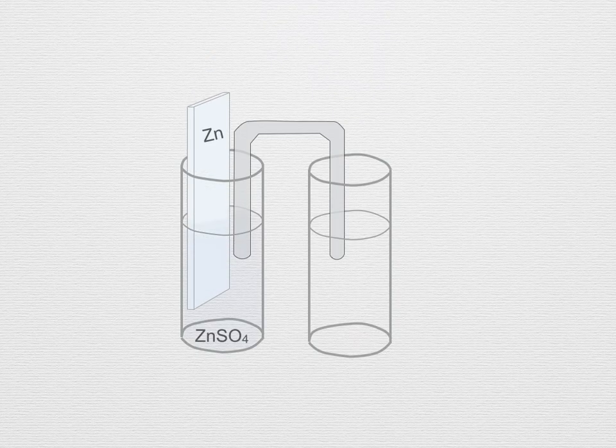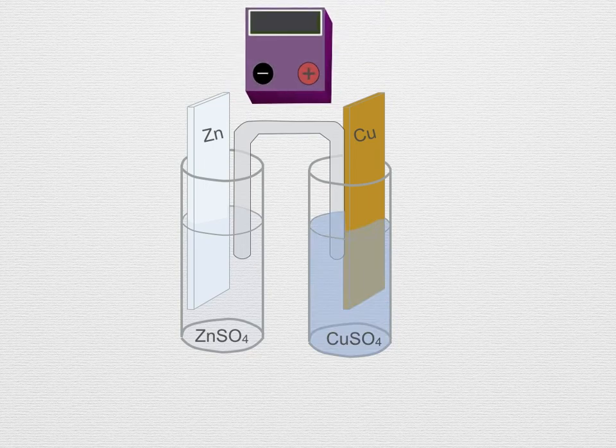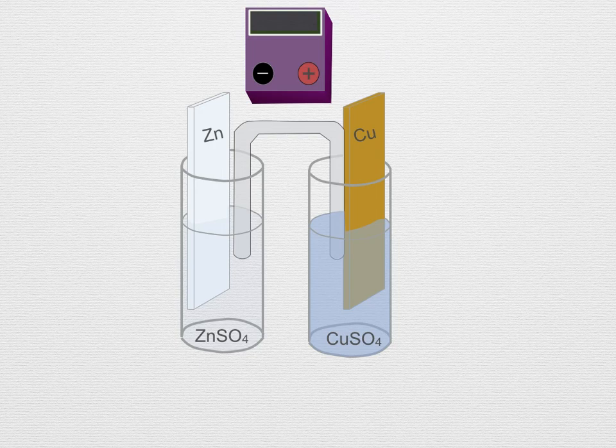An electrochemical cell is formed using a zinc electrode in a zinc sulfate solution and a copper electrode in a copper sulfate solution. If the reactants are at standard conditions, what is the measured potential of the cell?